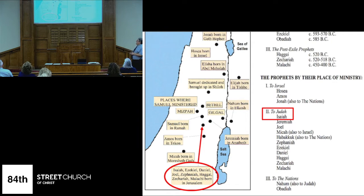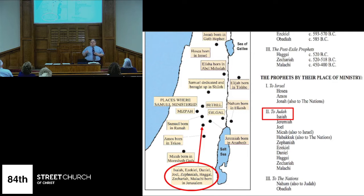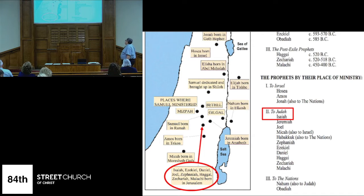Isaiah is also a prophet to Judah. The place where he is is where you find others prophesying a great deal — in Jerusalem. Isaiah, Ezekiel, Daniel starts out there then goes to Babylon. You have Zephaniah, Haggai, Zechariah, and Malachi — all prophesying. They're born in Jerusalem, and most of them, for the bulk of their time, are in that southern kingdom and talking to them.